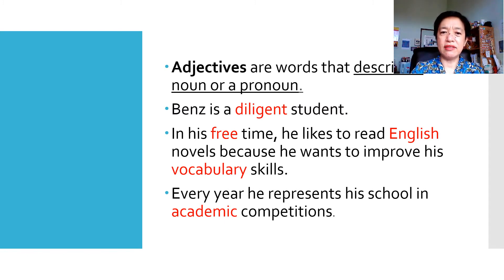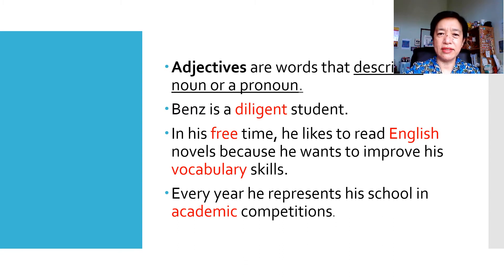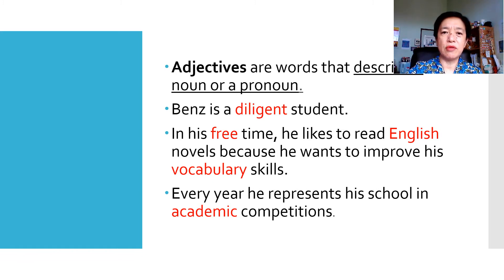Every year, he represents his school in academic competition. So, all these words in red are adjectives. English modifies or describes novels, vocabulary describes skills, and academic describes the word competition.